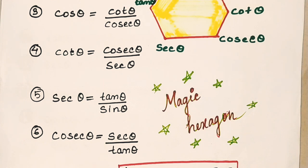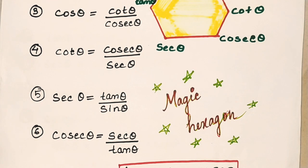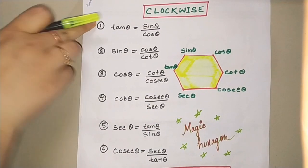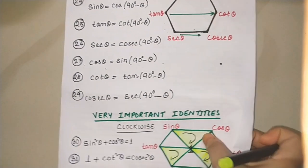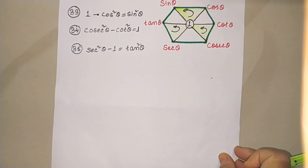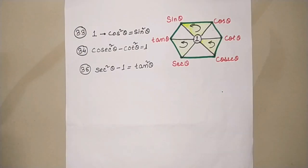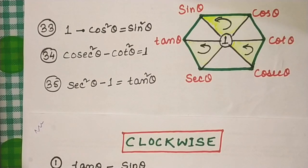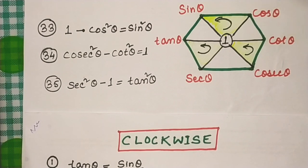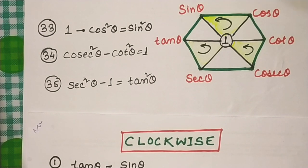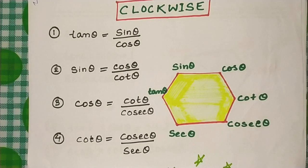Hello students, welcome to my channel. I'm Rumani, your maths teacher. Today I am going to share a magical trick about a hexagon. I will show you 35 formulae that you will be able to remember. These are just substitutes — just a magic I am going to show you. But it doesn't mean you don't have to know the reason behind why sin²θ + cos²θ = 1.